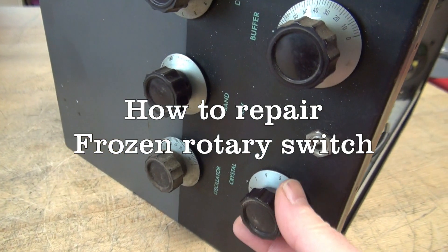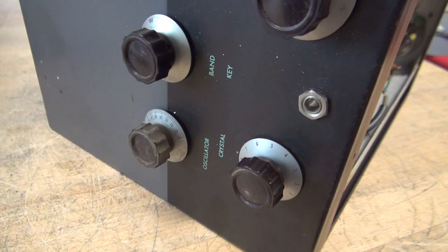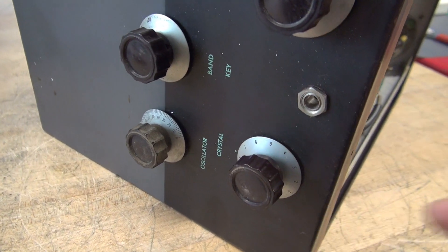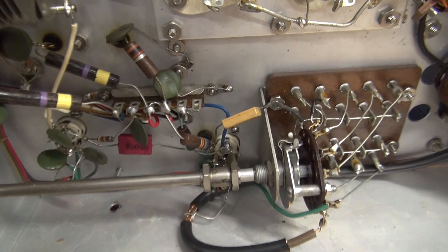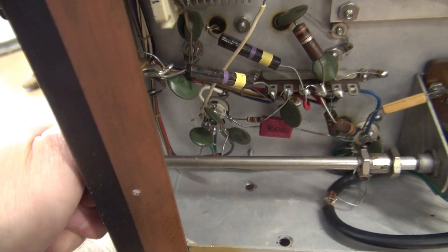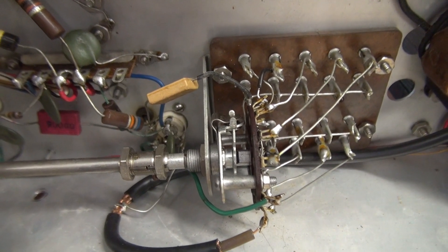Here's the issue: I have a frozen wafer switch on the Johnson Viking 2 for the Crystal Select. Currently it's stuck on the VFO position. I can crank on that thing and she is frozen solid. So what do you do?